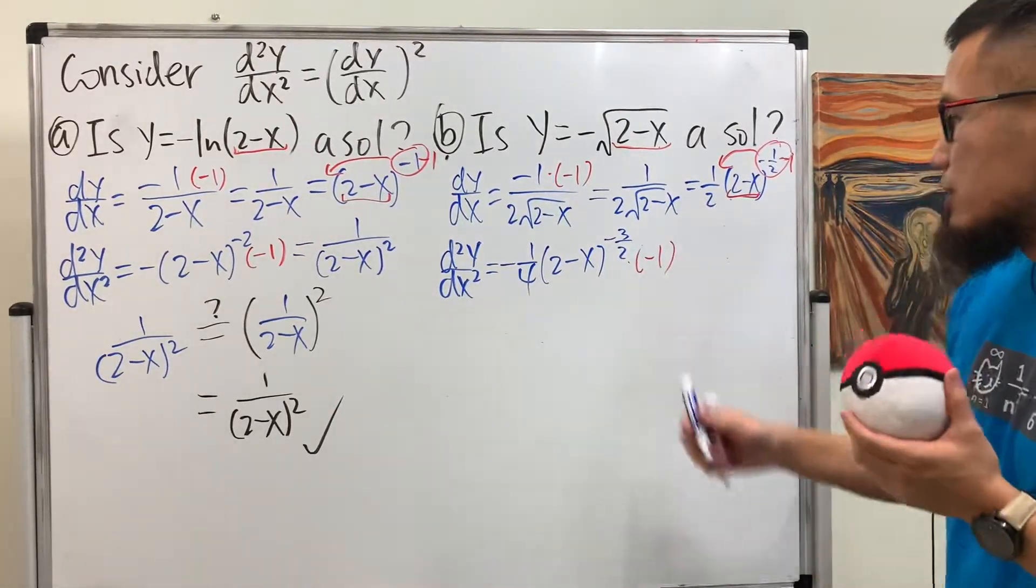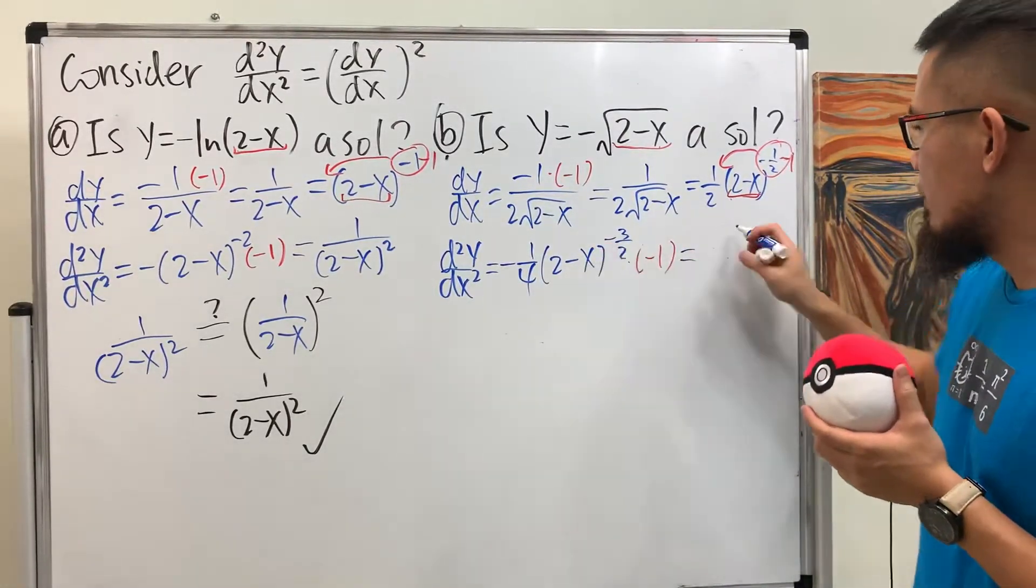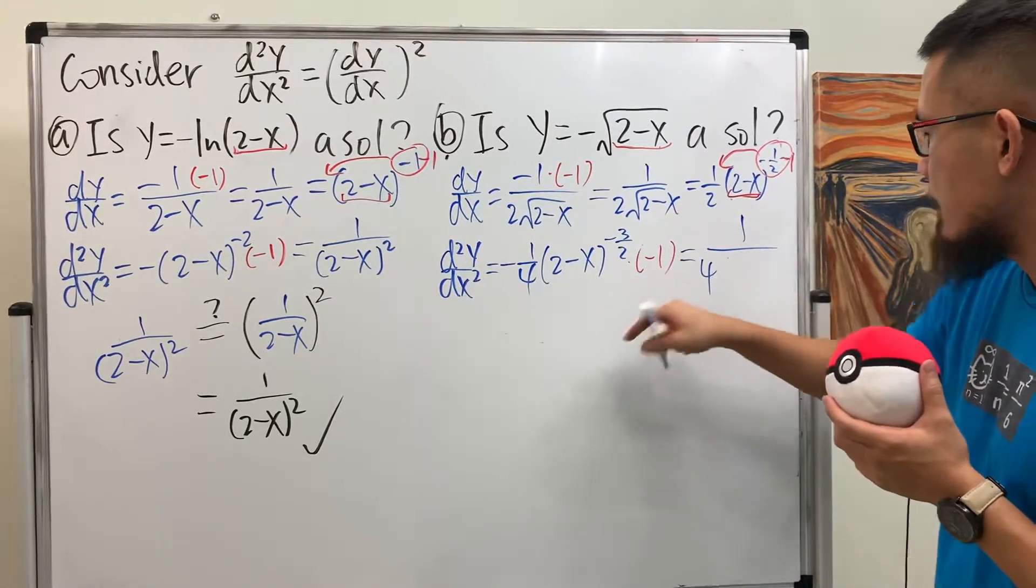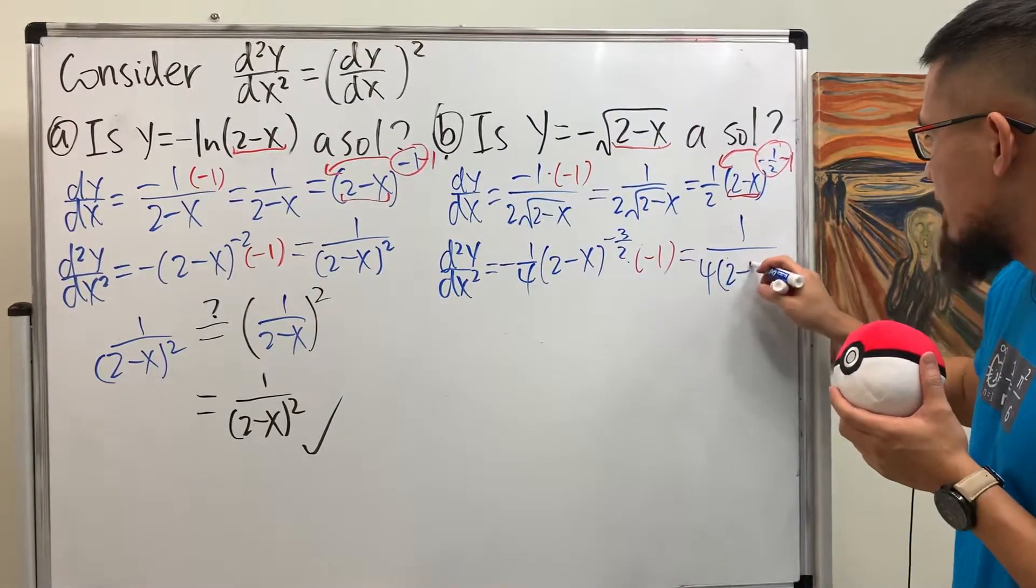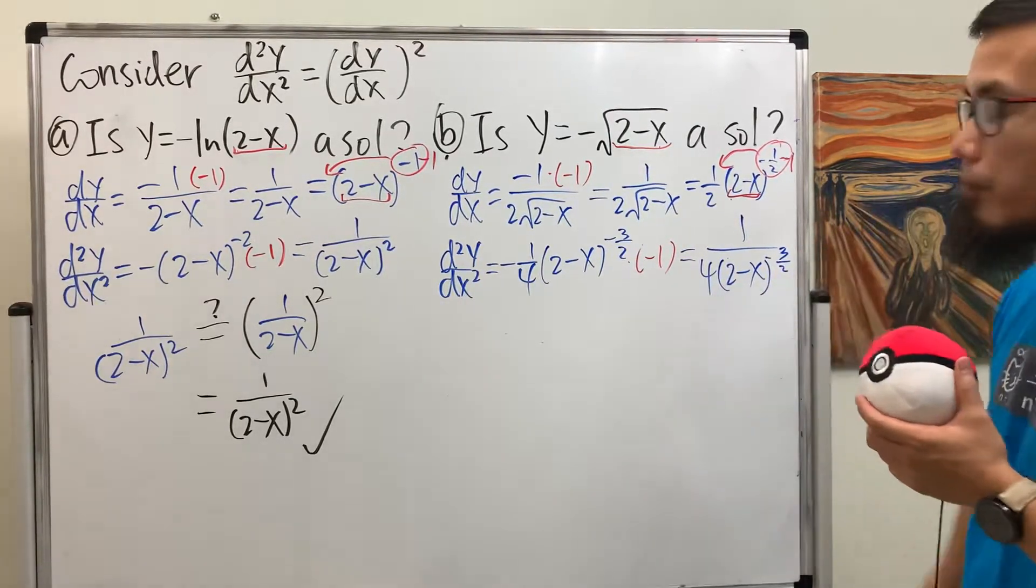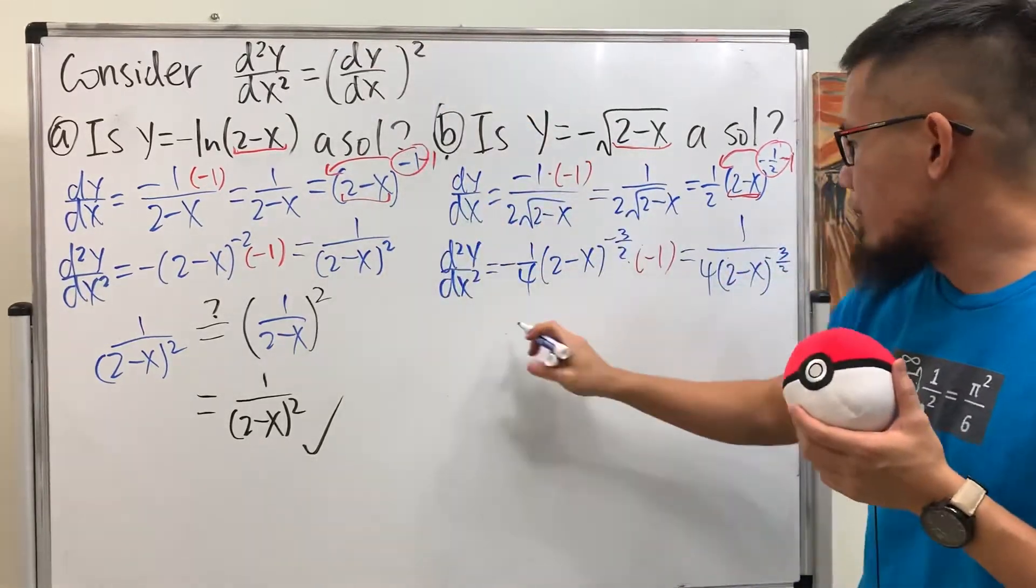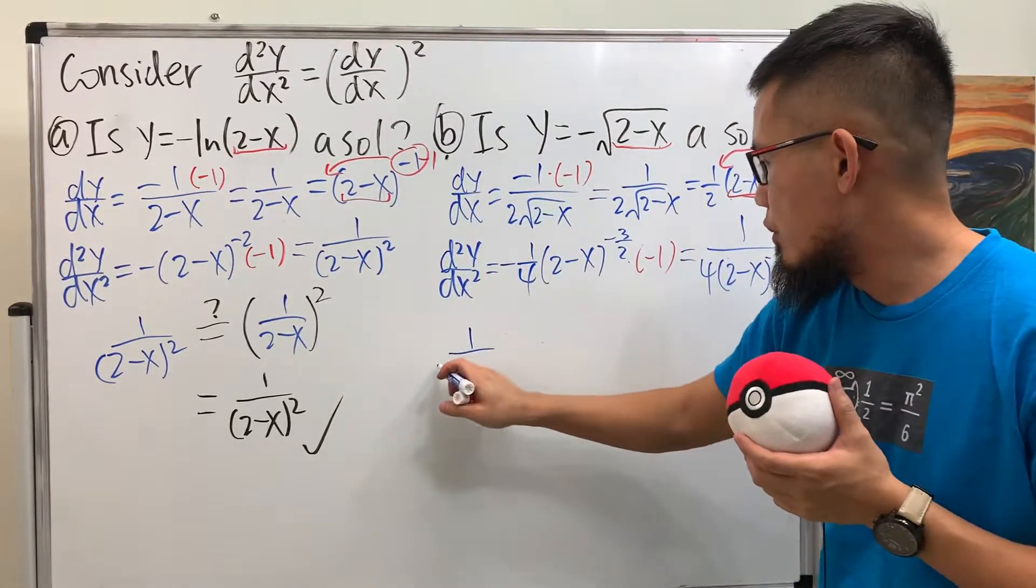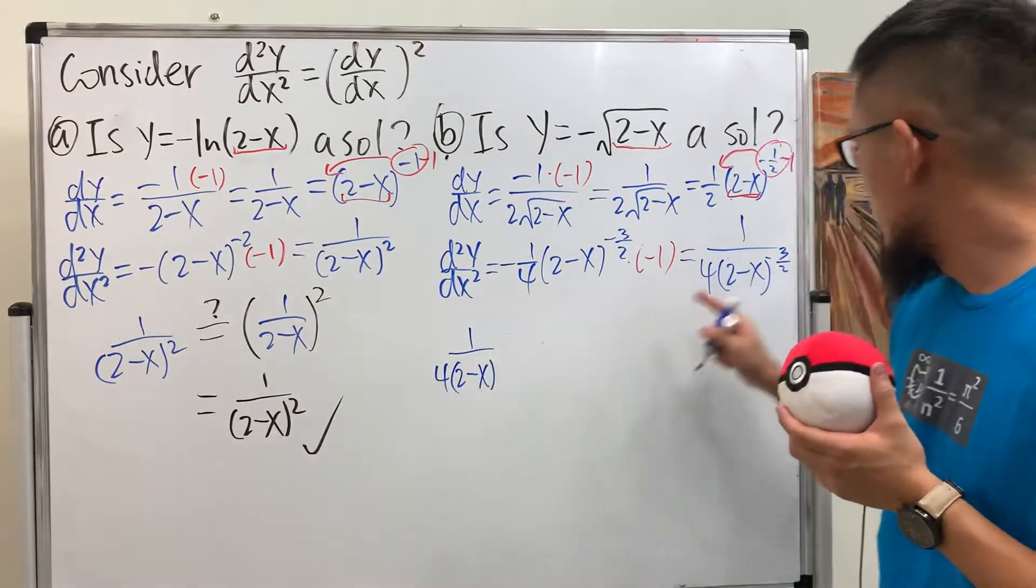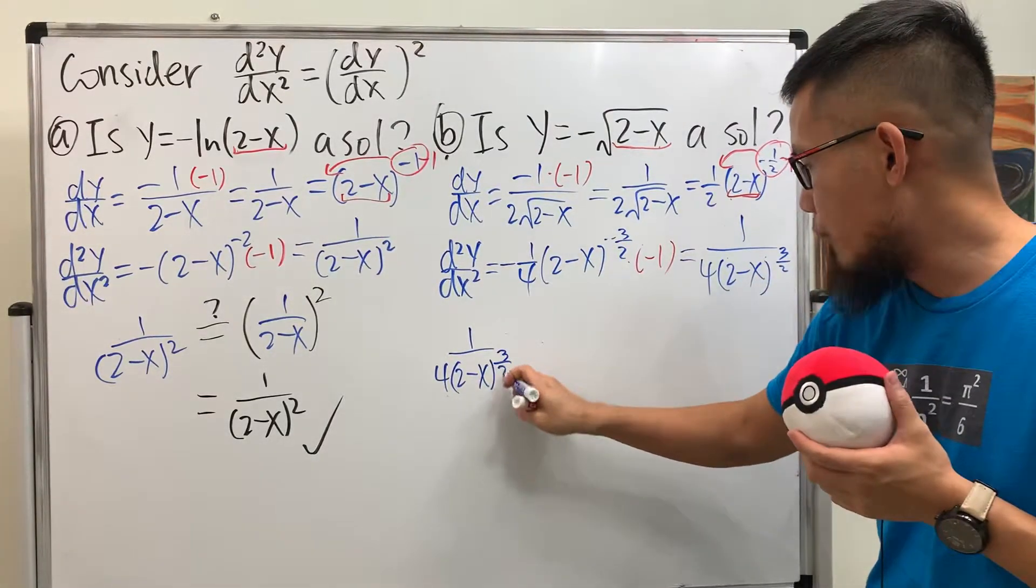And now, let's just put everything nicely. Negative negative is positive. And we have 1 over, let me have the 4 right here, and also this on the bottom, which is (2-x) raised to the negative 3/2 power, like so. Okay, put this in there. So, we are looking at 1 over 4 times (2-x) raised to the, this is supposed to be positive, right? Positive power. Positive 3/2 power.